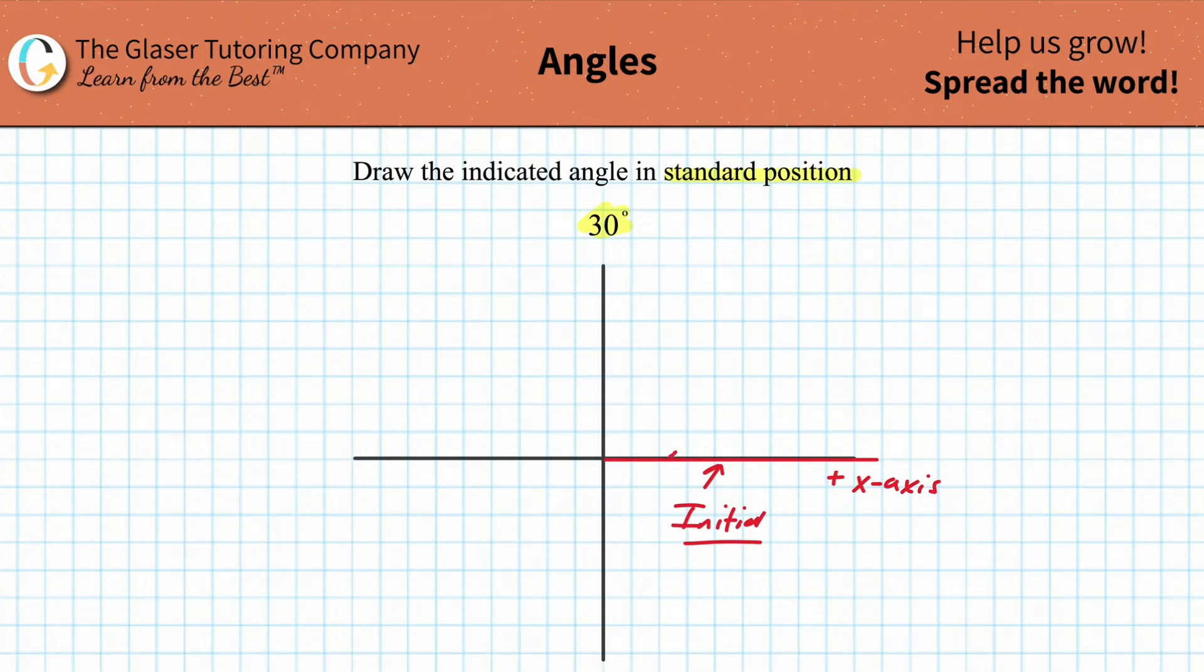Notice that this whole angle here is going to be 90 degrees - this forms a right angle. So 30 degrees should be about roughly a third of that, so maybe it's going to be somewhere in here.